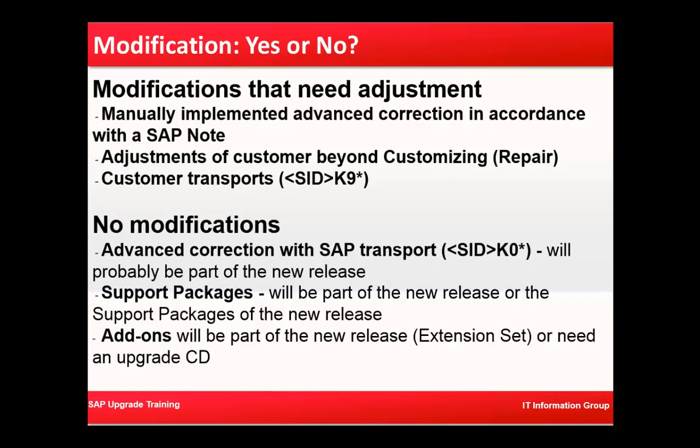Modifications basically need to be adjusted in three ways: first, manually implemented advanced corrections in accordance with an SAP note; second, adjustments of customers beyond customizing — that is, you have done customizing but you may need to modify an SAP-supplied standard object, which is called a repair; and third, customer transport. Notes are applied to fix small errors, small corrections, or bug fixes.